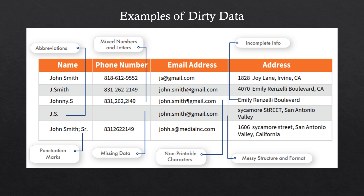In the email address column, all entries are somewhat different — a standardization issue making them all the same. We also have non-printable characters: specific characters in computer systems that shouldn't be in certain data types, which will mess up your data. In the address section there are two issues: messy structure and format — some data is capitalized, some is not — and incomplete data. For example, we have Emily Renzeli Boulevard but no number, no city, and no state. That makes it really difficult to work with.